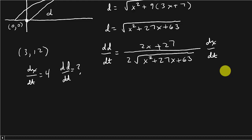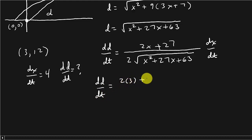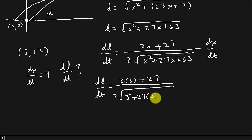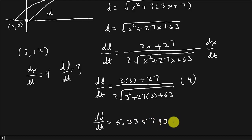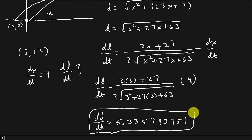Now we plug everything in: x equals 3 and dx/dt equals 4. So dd/dt equals (2 times 3 plus 27) divided by (2 times the square root of 3 squared plus 27 times 3 plus 63), all times 4. When we calculate this, dd/dt is approximately 5.33578375 — that's how fast the distance is changing.